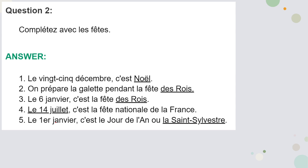Moving to the next question: complete with the festivals. So we have seen some festivals like Noël, La Fête des Rois, Le 14 Juillet, and Pâques. We have to fill them in the blanks. First is 'la veille de Noël c'est le 25 décembre' — what is on 25th of December? It's Christmas. So Noël is going to be the correct answer here.